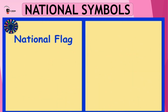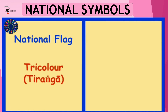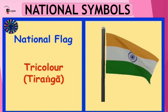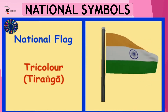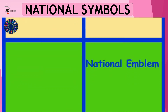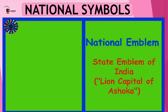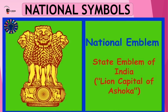What is our national flag? Our national flag is the tricolor — we also call it the Tiranga. What is our national emblem? It is the state emblem of India, also called the Ashoka Chakra.